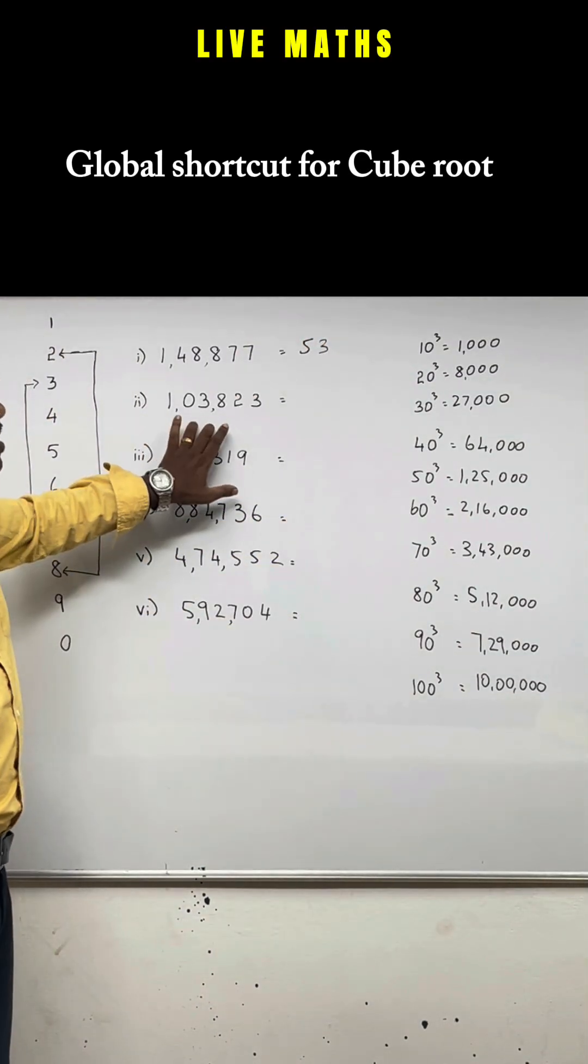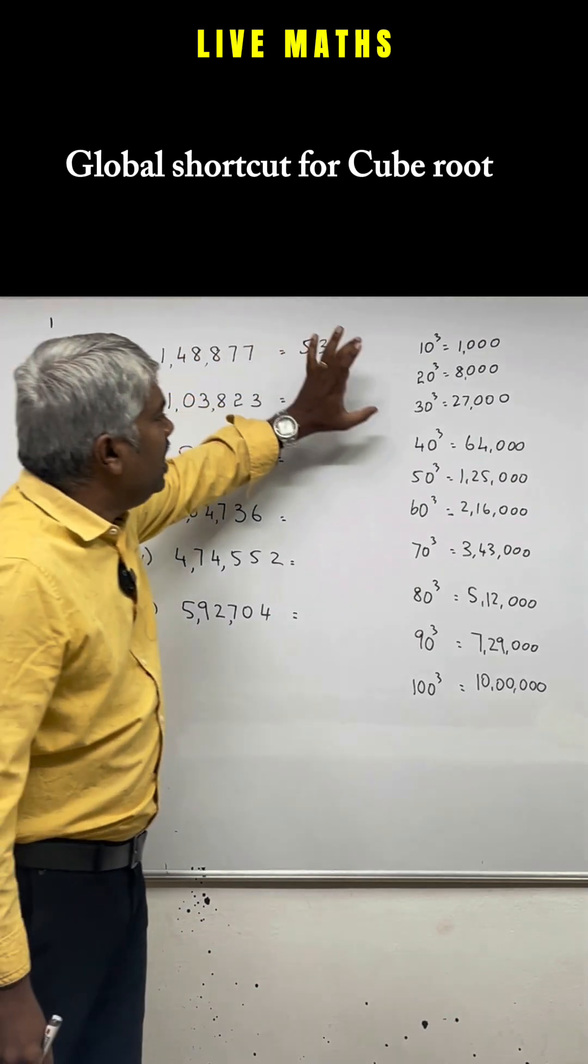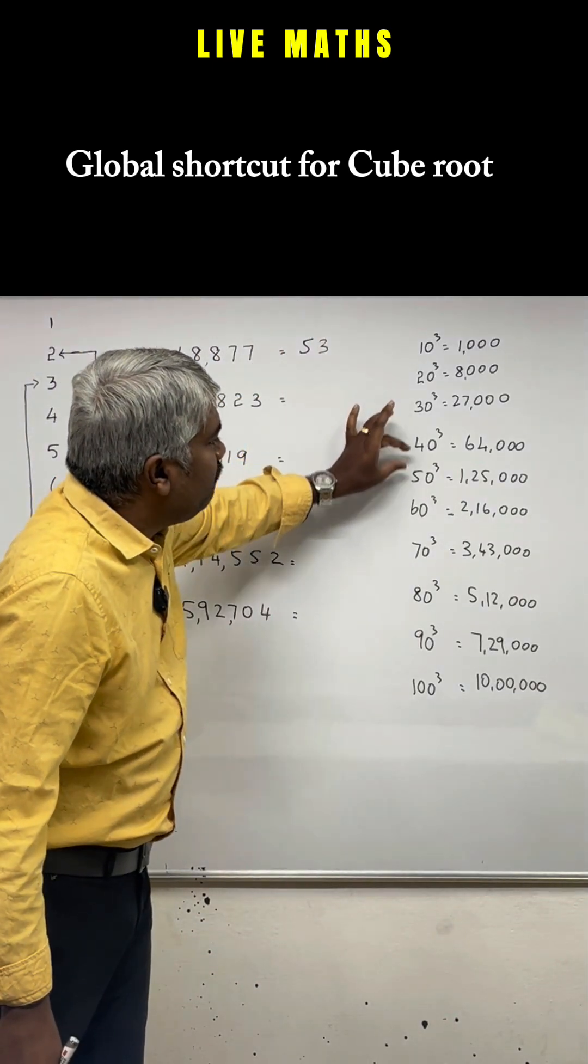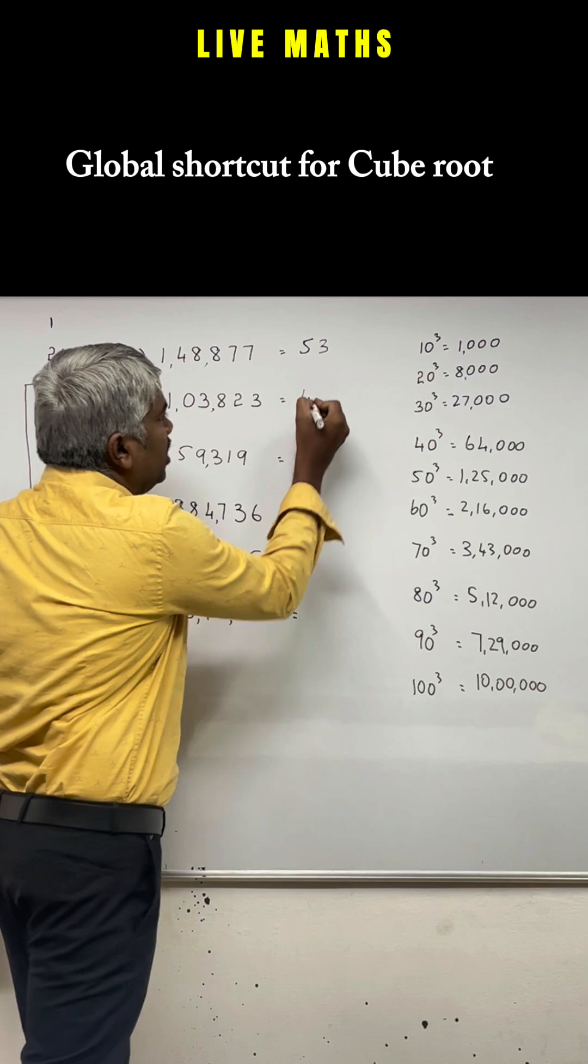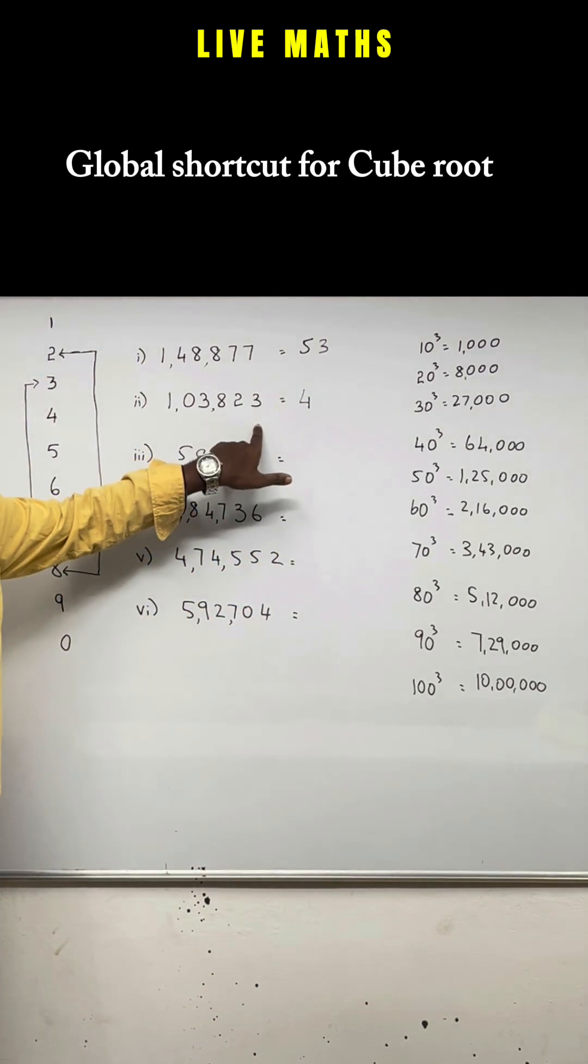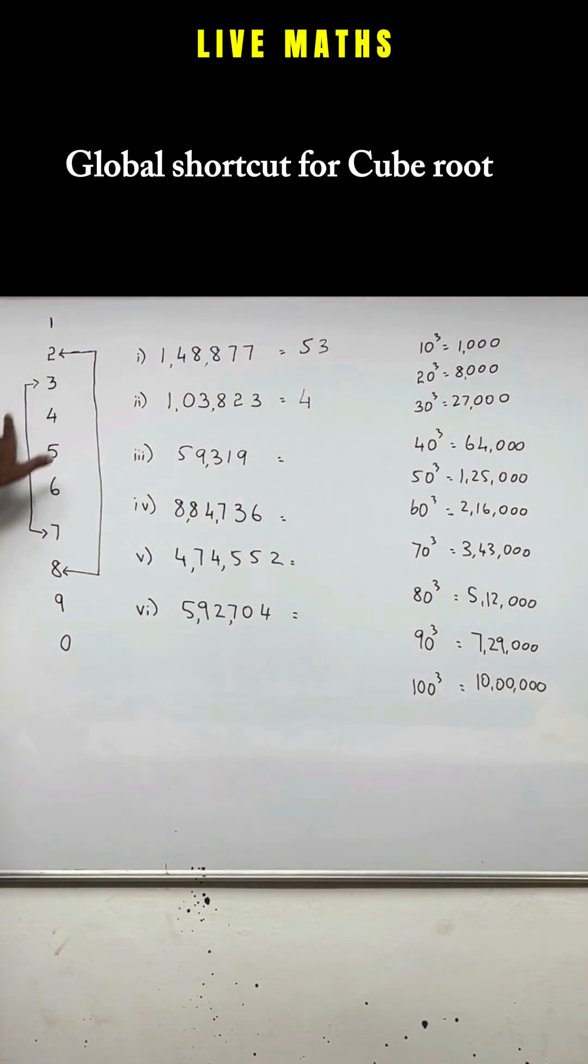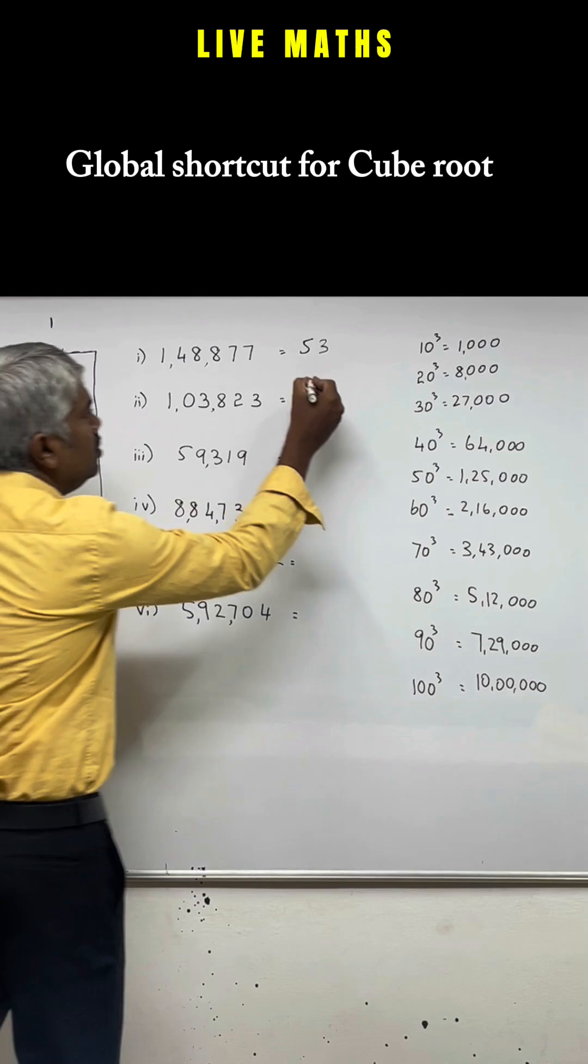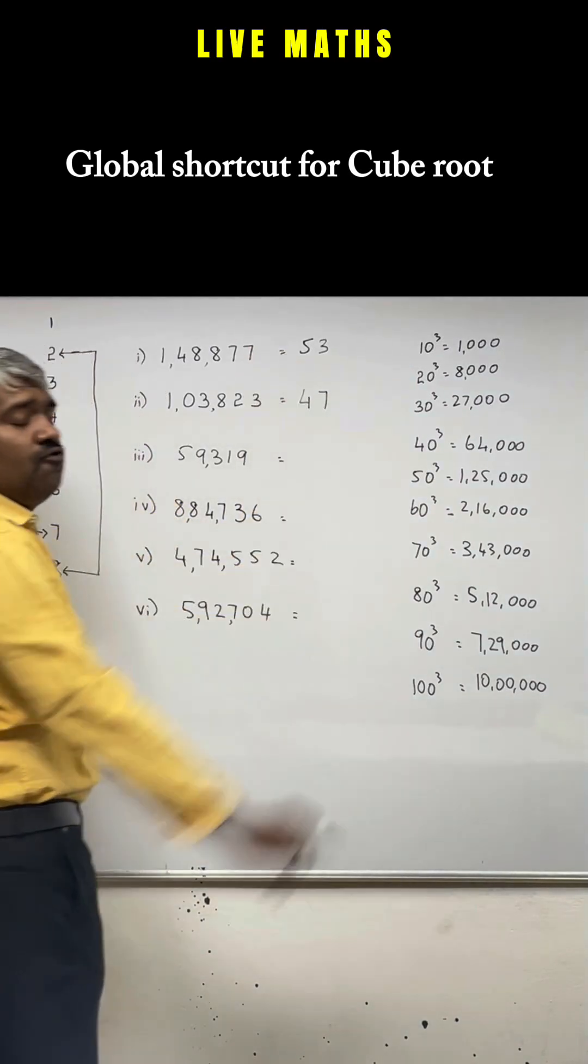Now, 1,03,000. Where does 1,03,000 come? It comes between 40 and 50, which has to be in the 40s. What is your last digit? 3. Is 3 connected to anything? Yes, it is connected to 7. So your answer is 47.